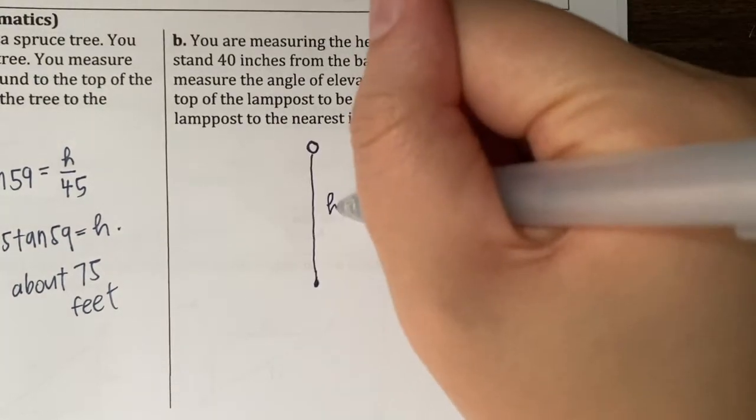So this time, we are going to need to draw a diagram. There's my lamppost. We don't know how tall it is. We're standing 40 inches away from the lamppost. And the angle is 70 degrees. Now we have our diagram. Let's set up our tangent ratio to solve for h.